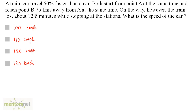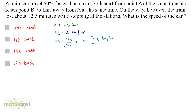The distance between A and B is 75 km. Let the speed of the car be x km/h. Since the train travels 50% faster, the speed of the train is 150% of x, which is 3/2 · x km/h. Both reach the destination at the same time, meaning the time taken by the car equals the time taken by the train plus the 12.5 minutes lost at stations.